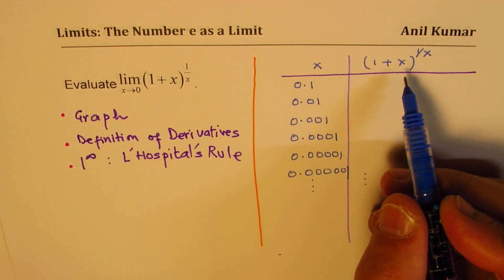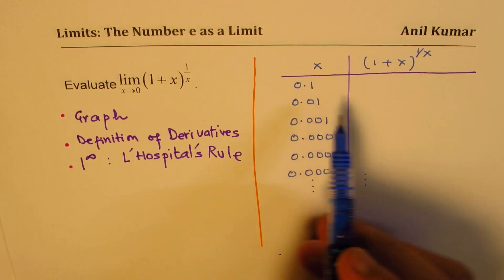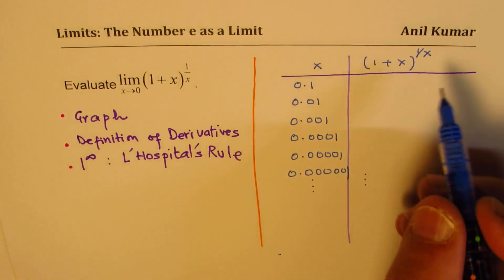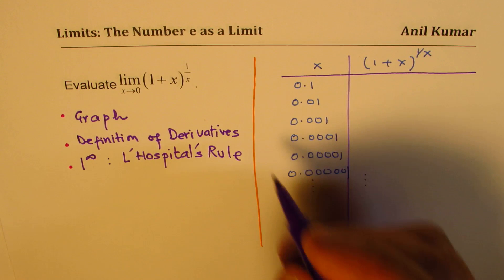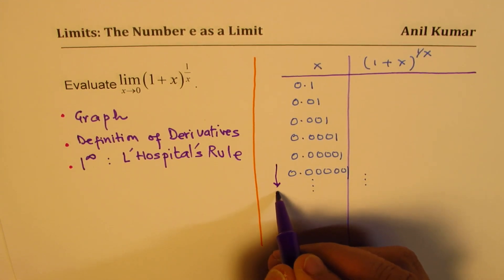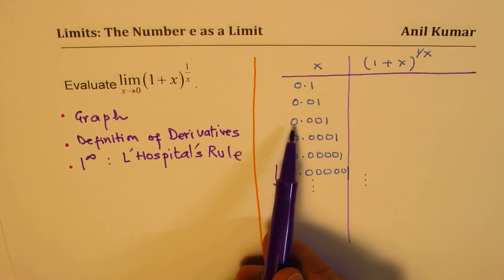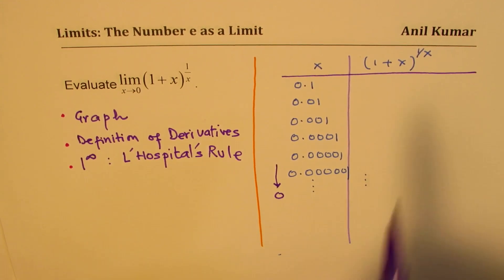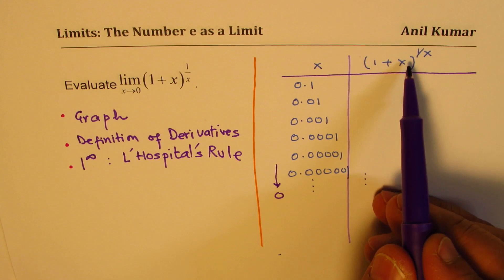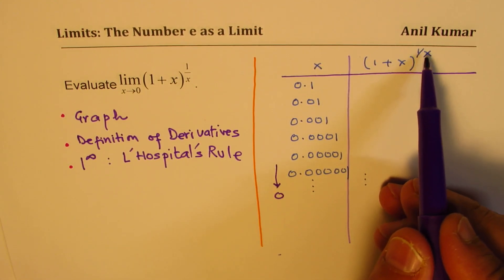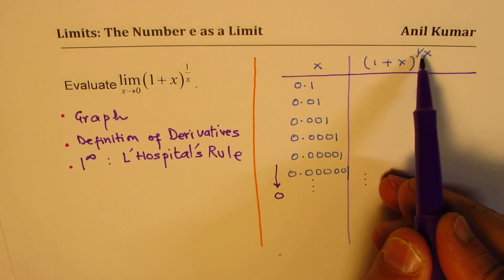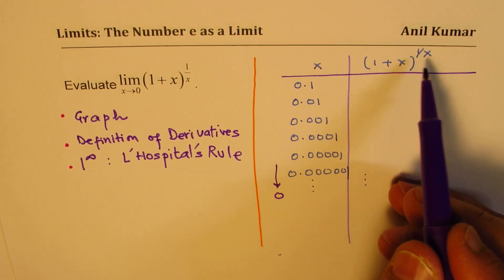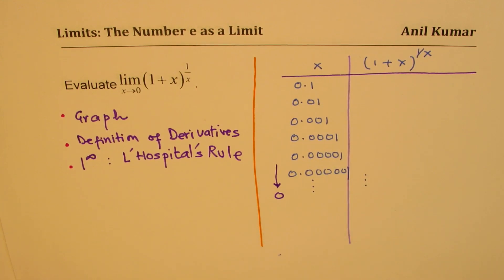A few more things to understand: what happens when x is very large? In that case, the exponential power will be 1 over a large number, which is 0. Something to the power of 0, we expect that to be 1. We'll see that part also while sketching this particular graph.